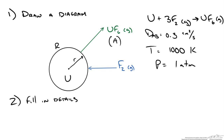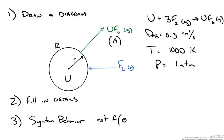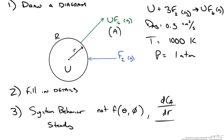Before working on the problem, let's define our system behavior. Uranium hexafluoride concentration is not a function of theta or phi, so we are only looking at the radial direction — specifically the change in concentration in that radial direction. We are looking at the flux of A away from the surface. We assume steady state behavior and no reaction in the gas space. Even though there is a reaction on the surface, within the gas film there is no reaction occurring.